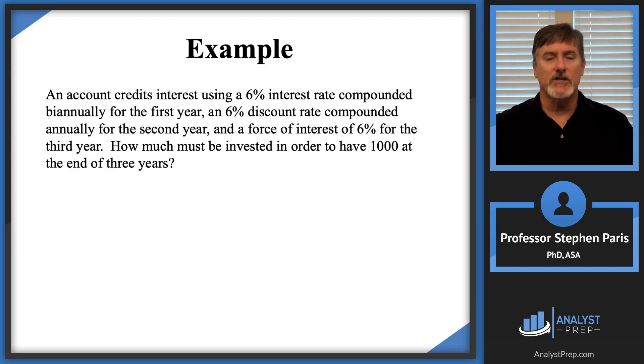An account credits interest using 6% interest rate compounded biannually for the first year, a 6% discount rate compounded annually for the second year, and a force of interest of 6% for the third year. So I've got 6% in all three situations, but it's used completely different in each year. The question is, how much must be invested in order to have $1,000 at the end of three years?